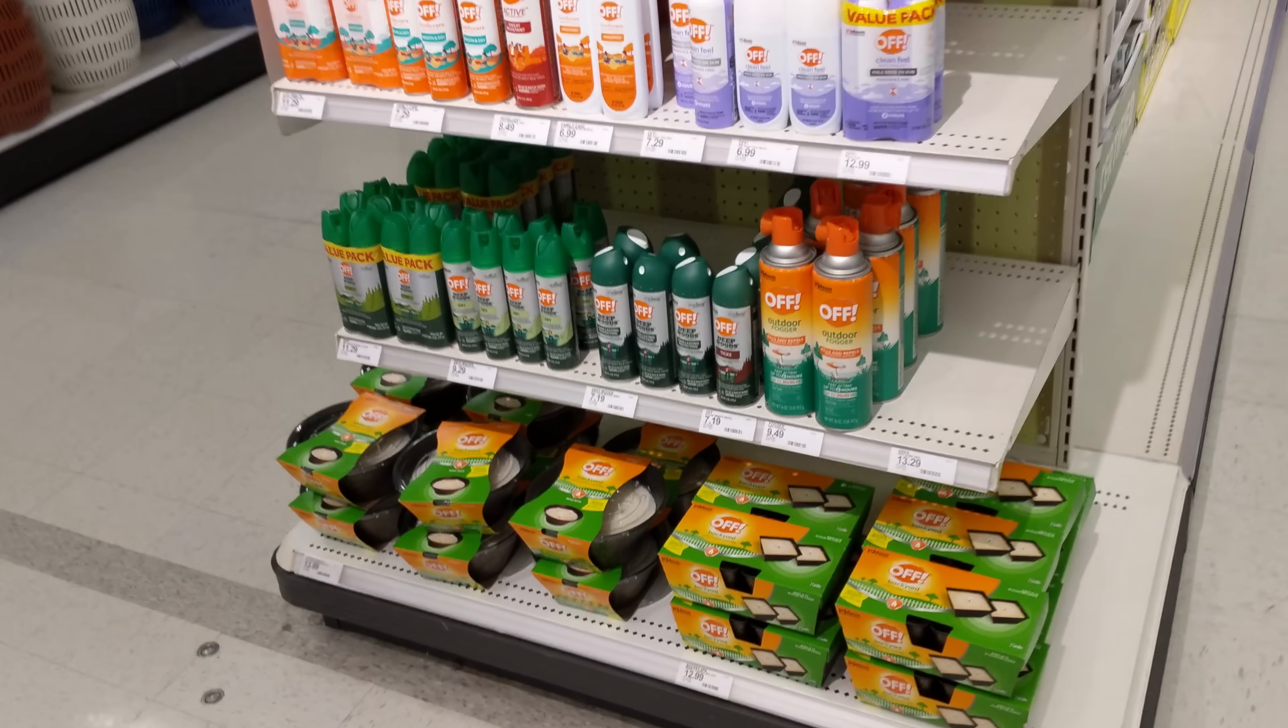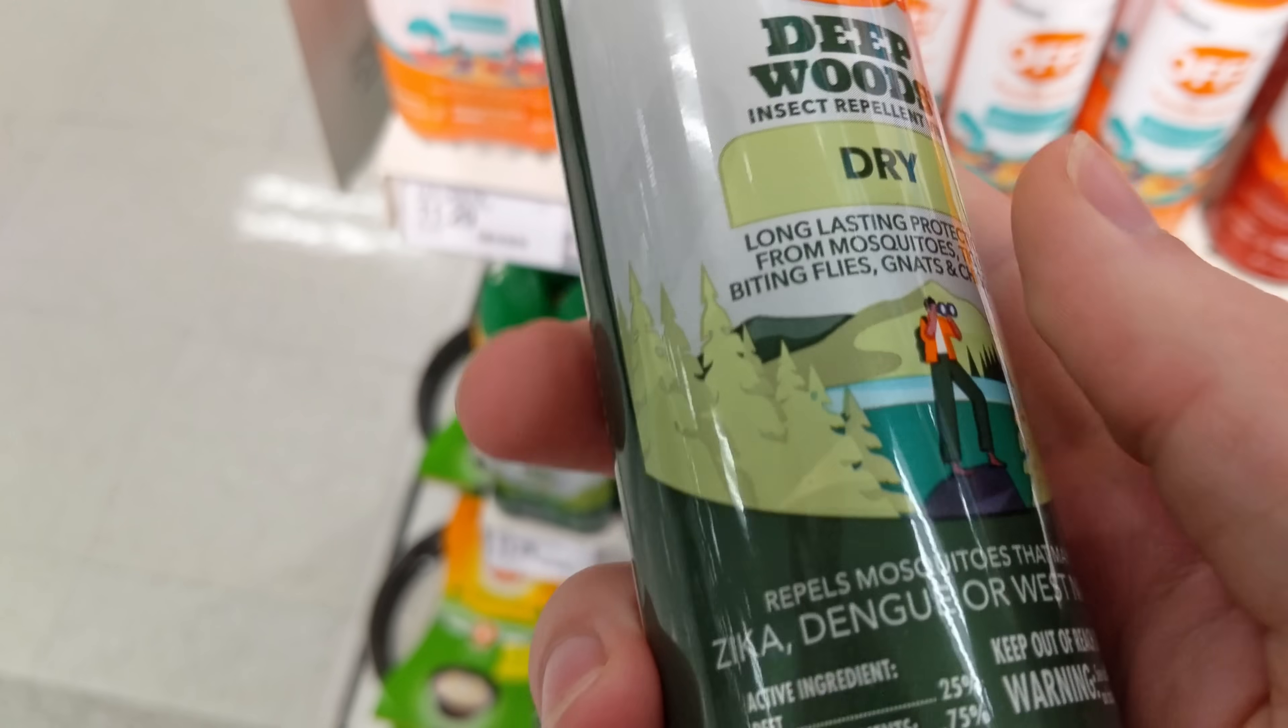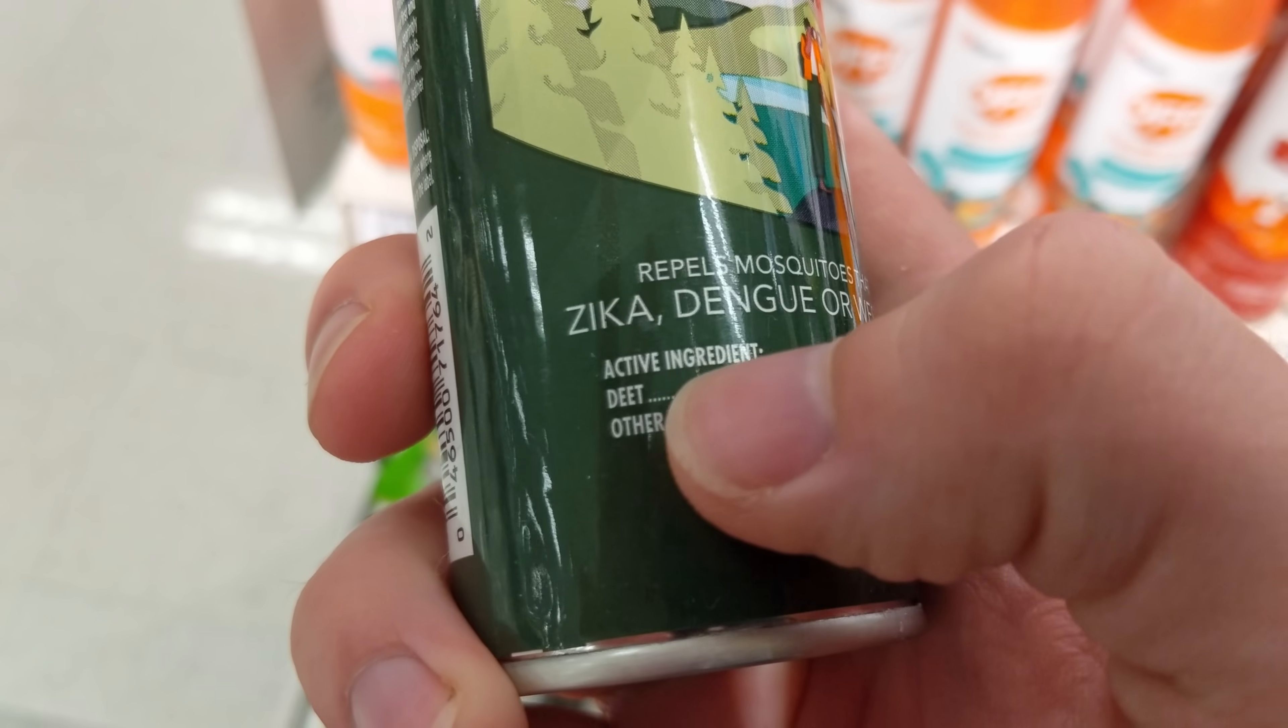A few months ago, I decided that I wanted to turn DEET bug spray into a local anesthetic called Novocaine. Let's just pretend like this is a normal way to start a YouTube video.